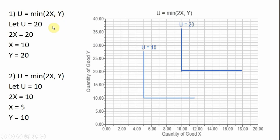And say we want to graph an indifference curve where u equals 20. So I'm going to set 2x equal to 20. Dividing through by 2, x equals 10. And then I'm going to set what's over here equal to 20. And so we simply get y equals 20.